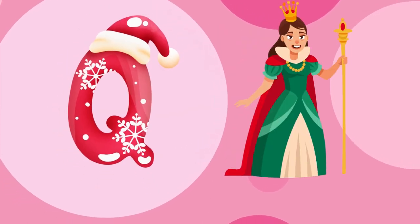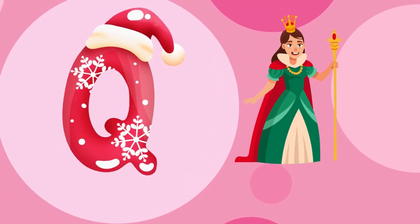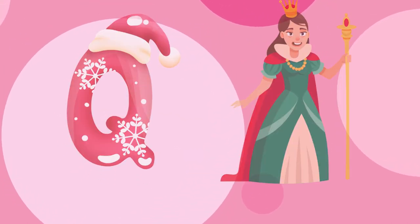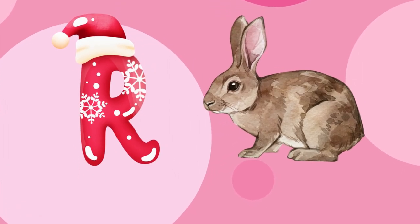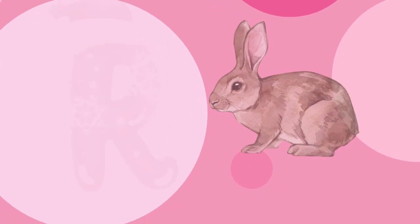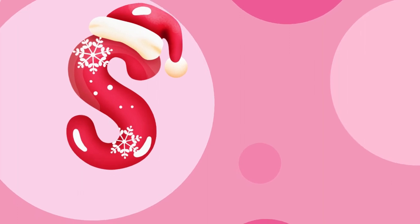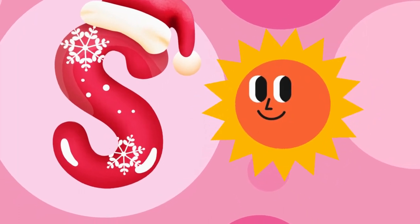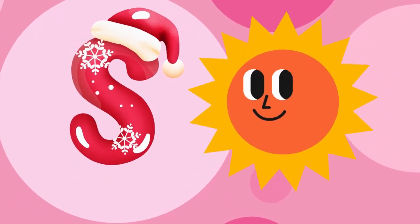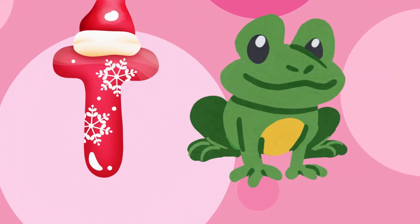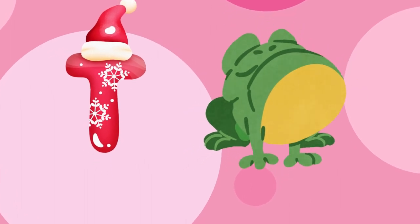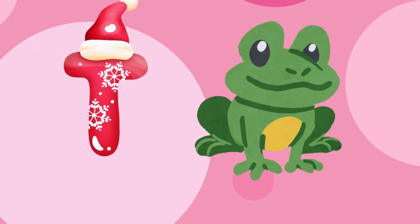Q is for queen, k-k-queen. R is for rabbit, r-r-rabbit. S is for sun, s-s-sun. T is for toad, t-t-toad.